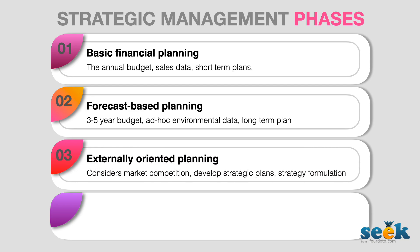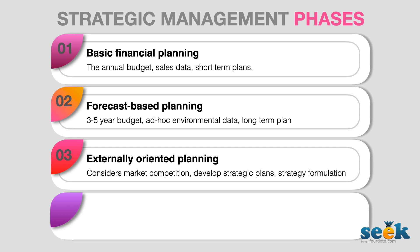The third phase is externally oriented planning, and this is the actual strategic planning we are talking about. In this phase, the planning responsibility is shifted from managers to top management. Strategic plans are created and based on that, strategic formulation happens. Competition and market needs are thought about in detail and responsiveness to that are strategically planned.